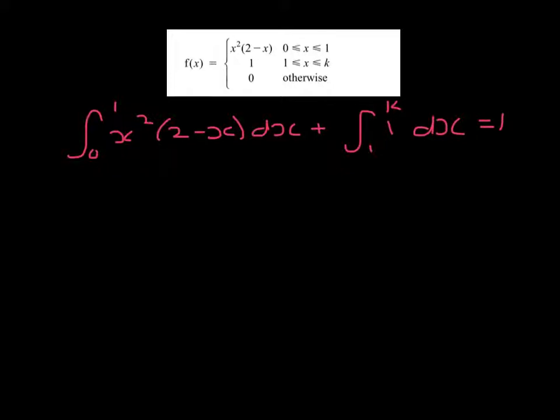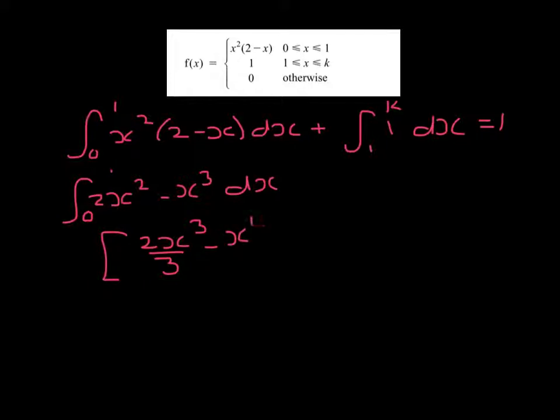We can't integrate the brackets, so we need to expand. It's 2x squared minus x cubed, which is going to integrate to give 2x cubed over 3 minus x to the 4 over 4, between 0 and 1, and that is 2 thirds take away 1 quarter.